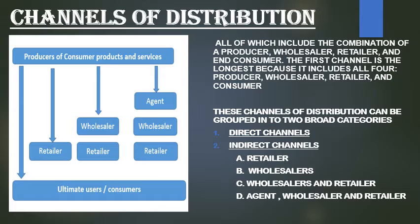Now we will discuss about the channels of distribution. There are many ways of distribution in the marketing process, and these channels of distribution can be grouped into mainly two broad categories: direct channel and indirect channel. As you can see in the picture, there is a graph showing the consumer, the retailer, the wholesaler or retailer, and the agent, wholesaler or retailer. First, what is a direct channel? When the producers sell their goods directly to the consumer, it is an example of the direct channel — no middleman is present between the producer and consumer.